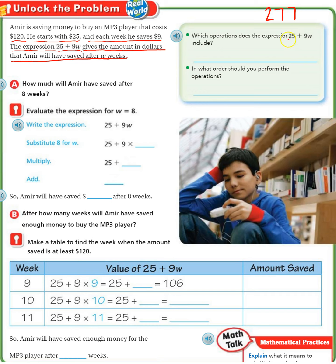Which operations does the expression 25 plus 9w include? The operations are add, subtract, multiply, divide. This problem has addition, and it also has multiplication, because remember, if you have a number with a letter right next to it, that means multiply. So it has addition and multiplication.